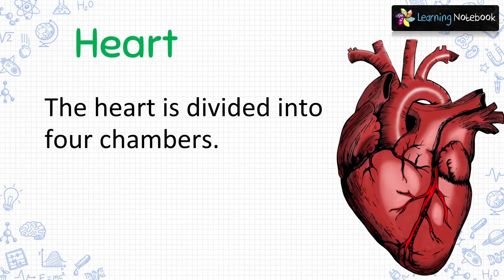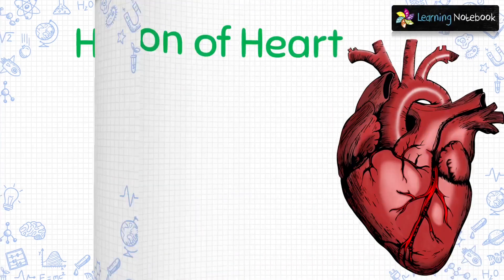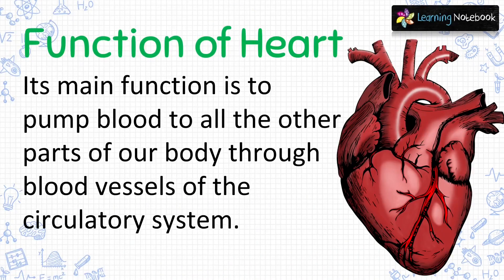Our heart is divided into four chambers. The upper left and right chambers are called atria. The lower left and right chambers are called ventricles. Its main function is to pump blood to all the other parts of our body through blood vessels of the circulatory system.